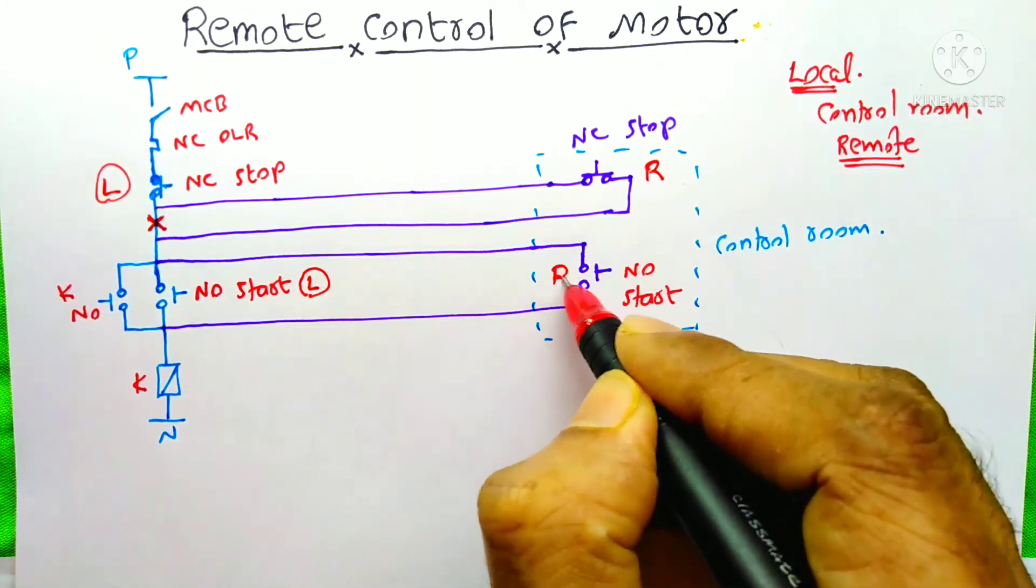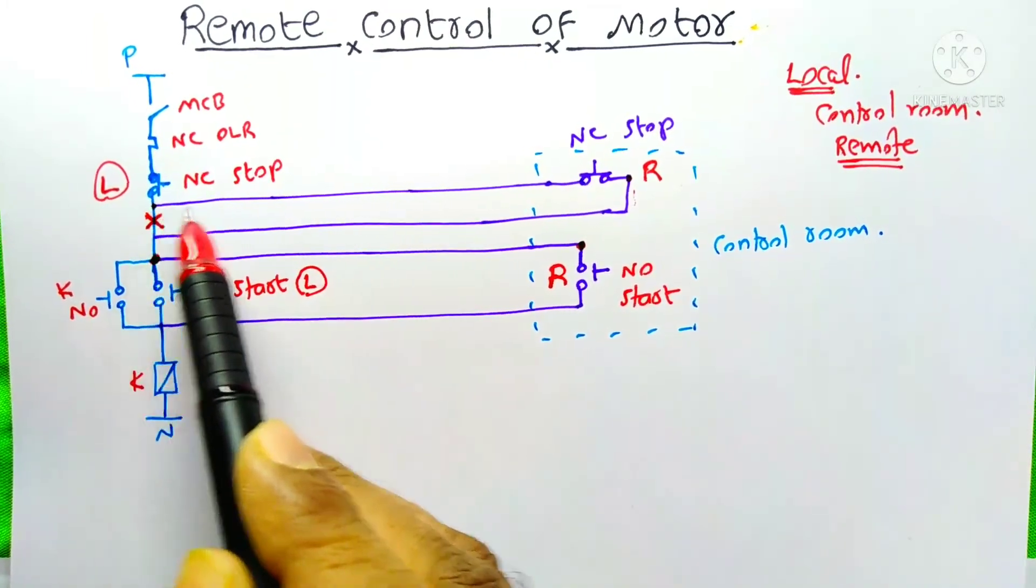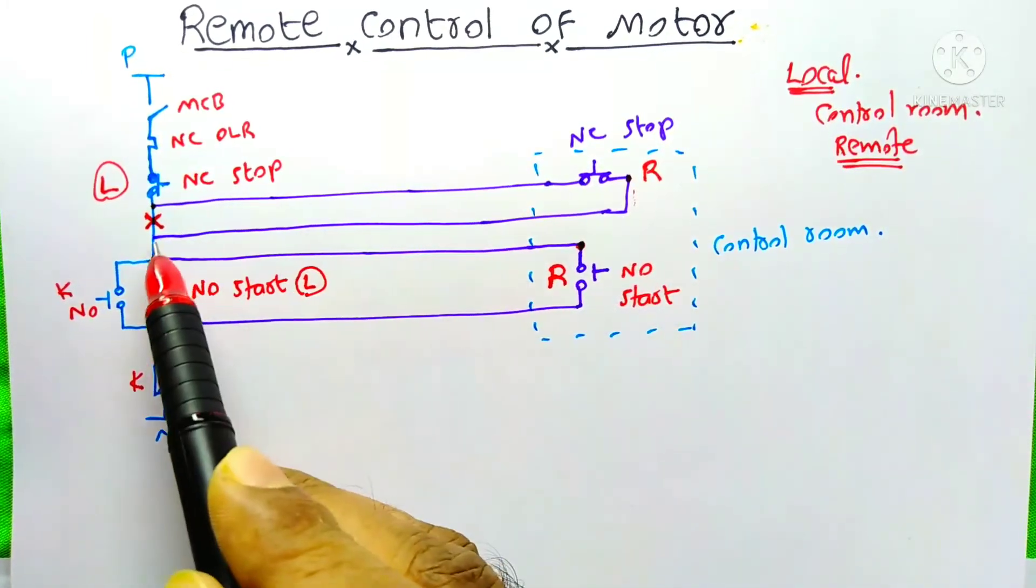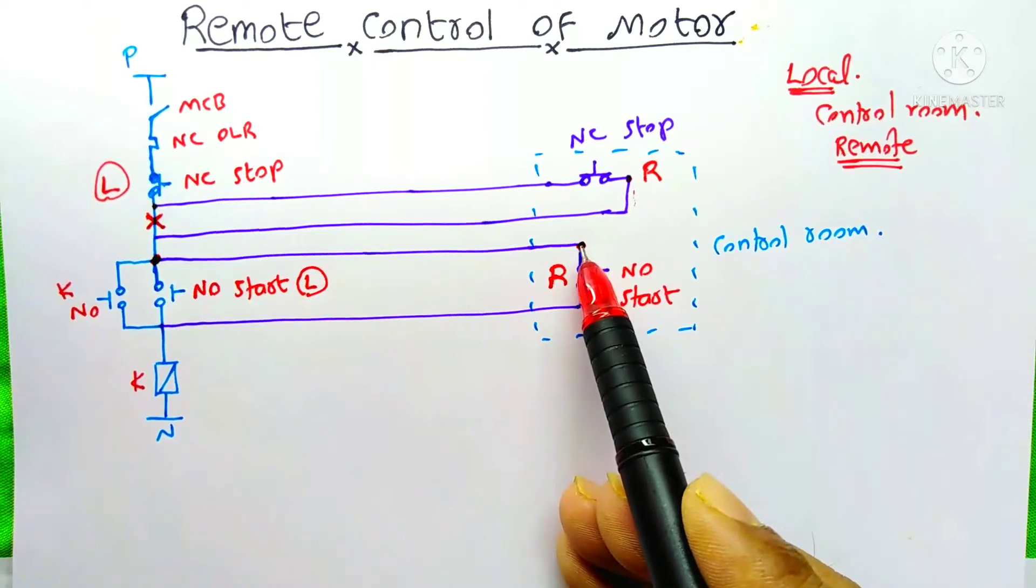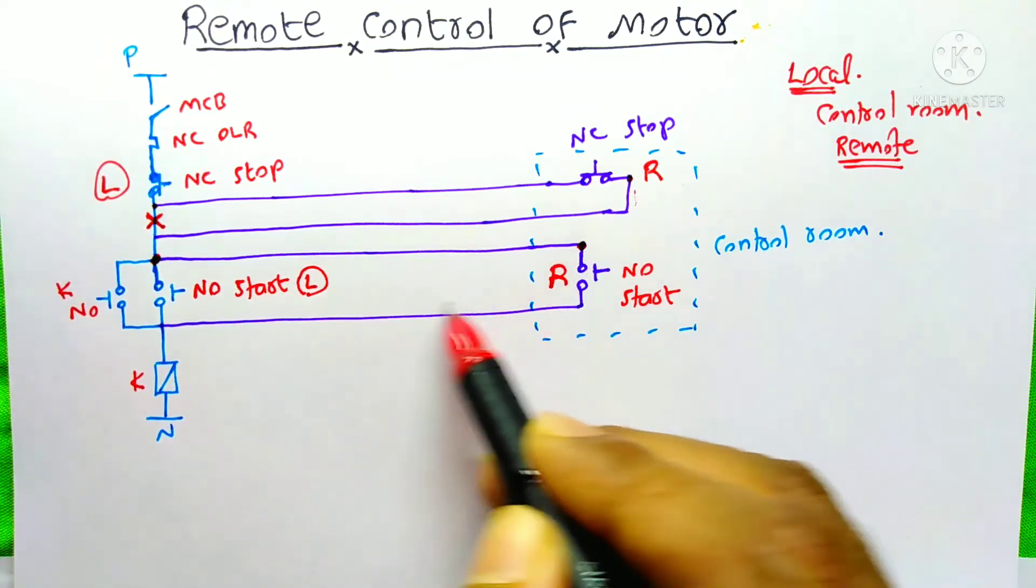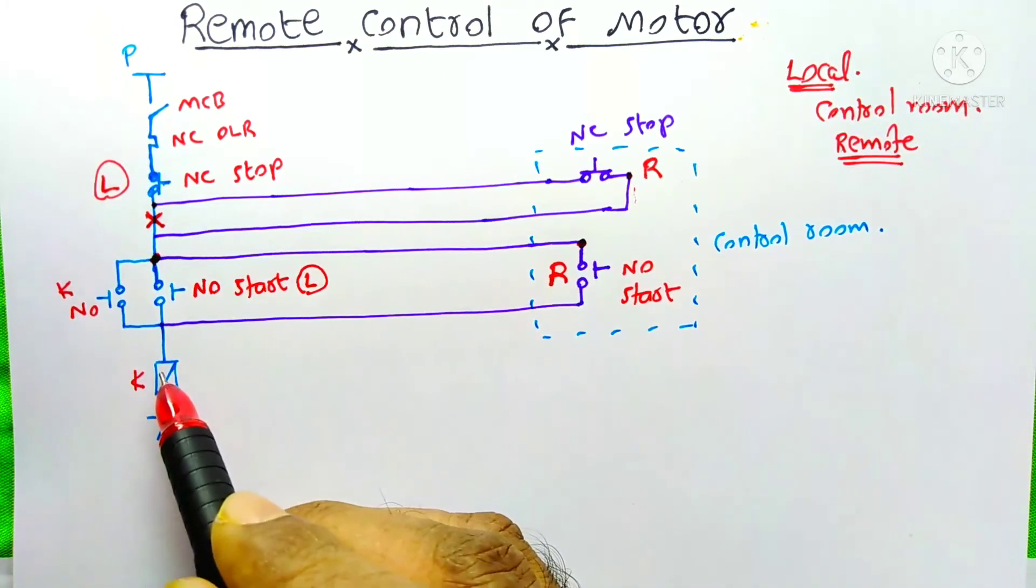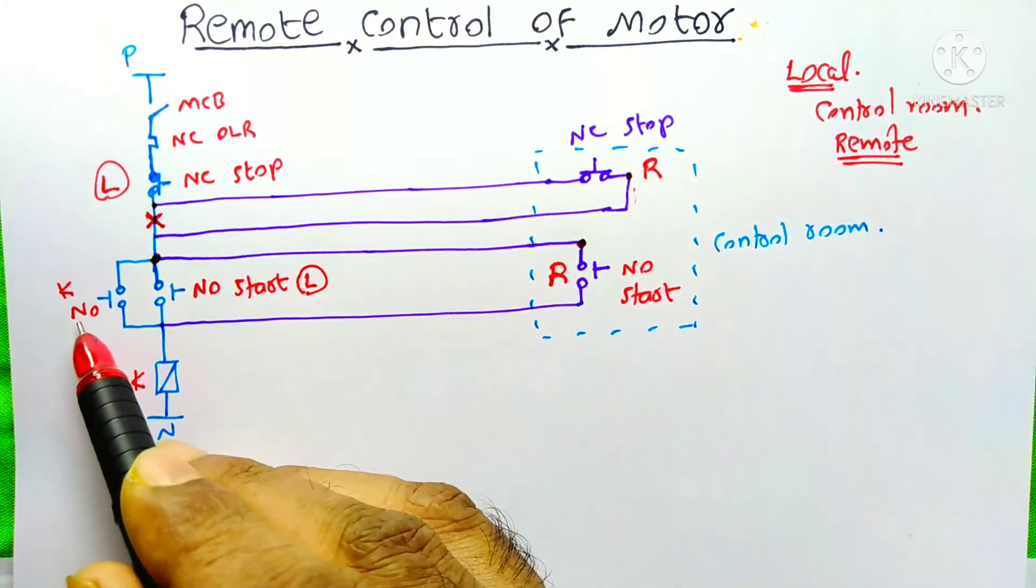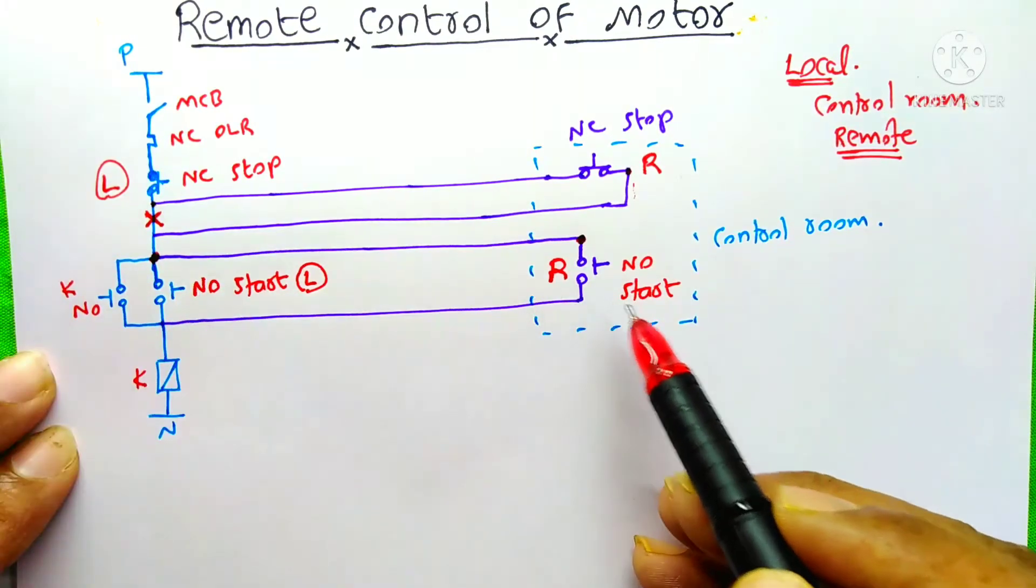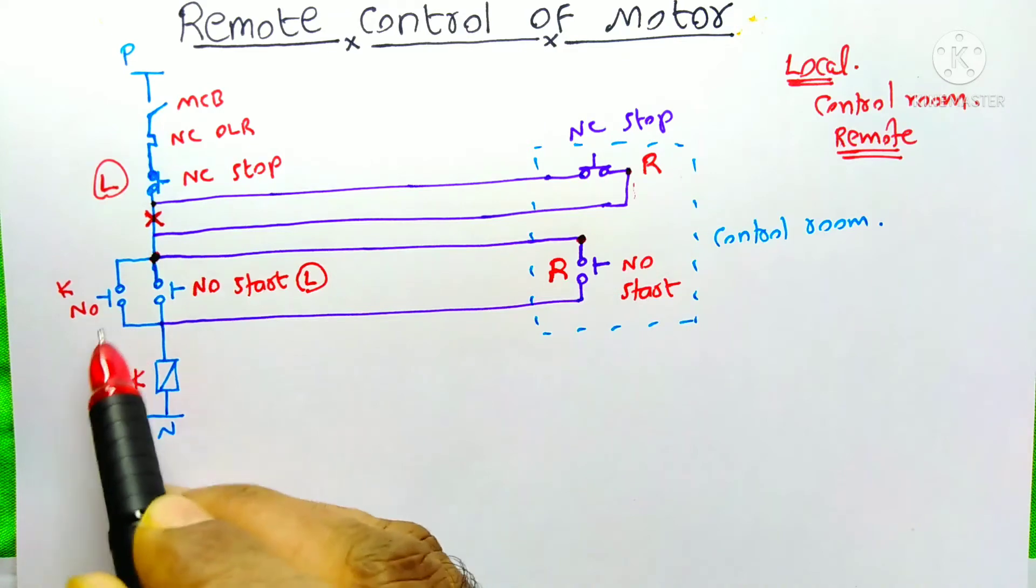And this one is also the remote. If we on this MCB, then the power flows through here, here and through here. And it will reach here and up to here. If we push the start button on our control room, then the power flows through here and it will reach the contactor. And if the contactor is on, then its holding contact will become NC. Even if we release this start push button, this holding contact will hold this circuit.